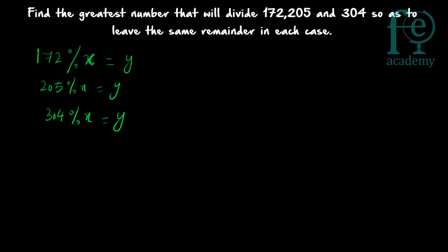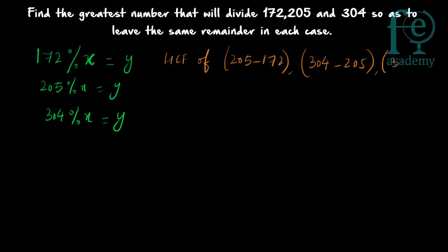For this type of question — where the same remainder is left in each case — the answer is the HCF of all pairwise differences: 205 − 172, 304 − 205, and 304 − 172. You take all combinations of differences between the numbers. That means you need the HCF of 33, 99, and 132.